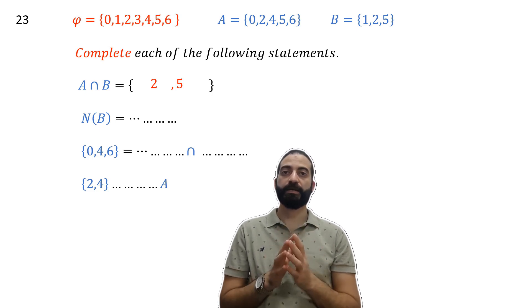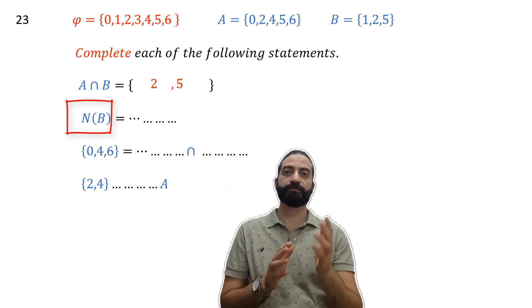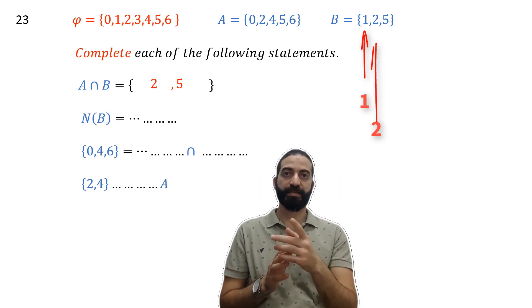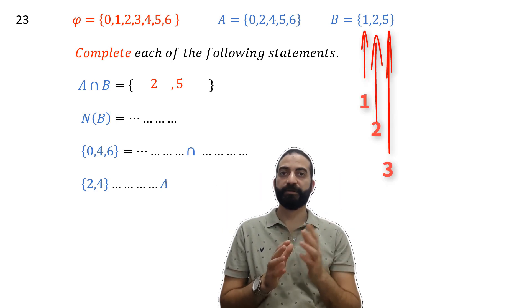Now we are required to get the number of elements of B. One, two, three. The number of elements of B equals 3, so N(B) = 3.